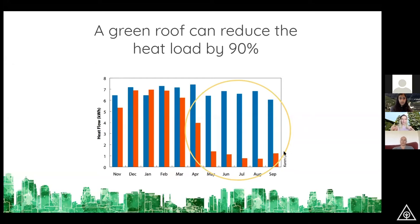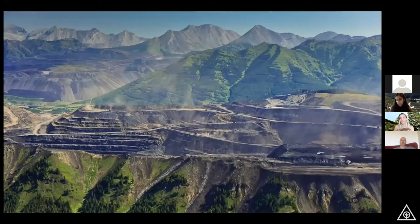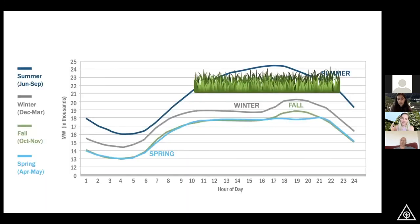Once you add a green roof, your summer cooling load — the electricity or energy it takes to keep it cool — goes down by about 80%. So those earlier slides that showed that big peak electricity spike — it's quite possible with a lot of green roofing that we could actually get that down. Widespread green roofing can reduce the need for air conditioning, which reduces the amount of gas and coal burned in power stations. Instead of shaving the top off mountains with mountaintop coal removal, we can use green roofs to shave the top off the summer peak electricity grid.